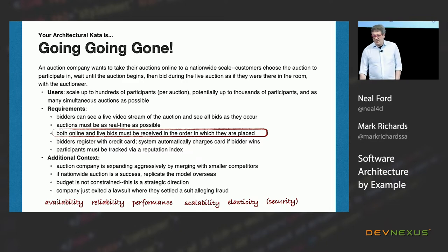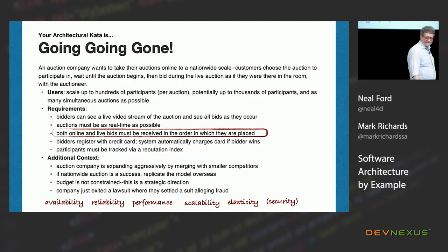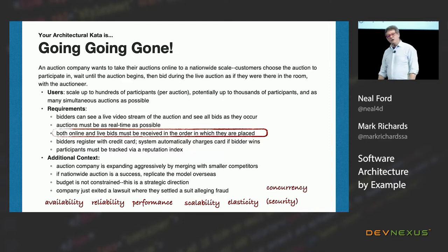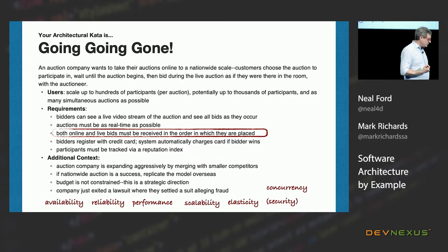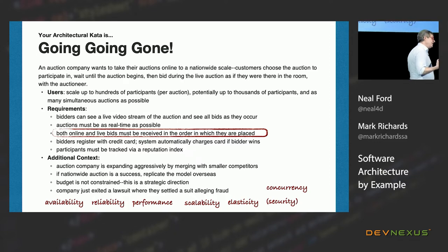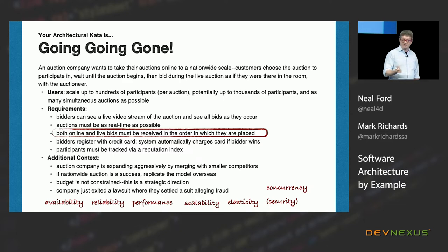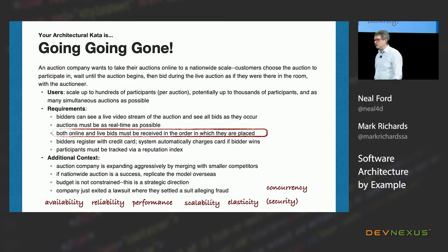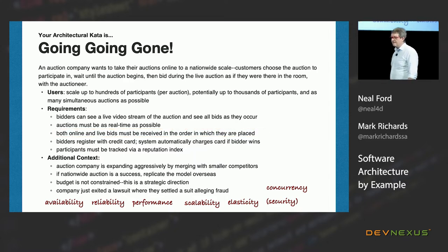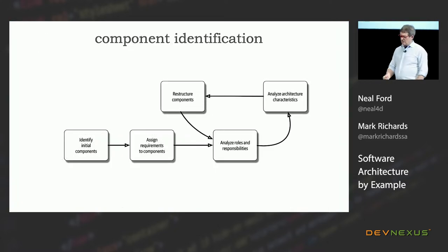Both online and live bids must be received in the order in which they're placed — this is something I'm calling concurrency, because this is one of the things our solution is going to have to manage. We're multiplexing live bids and online bids, and we've got to make sure that architecturally we can guarantee this, because this is part of what the system really needs to do.